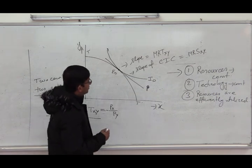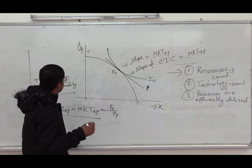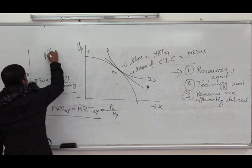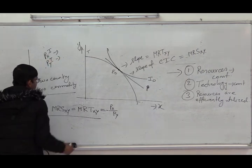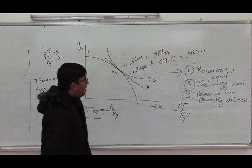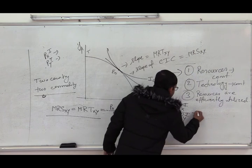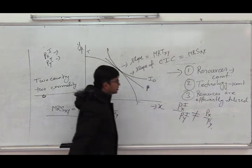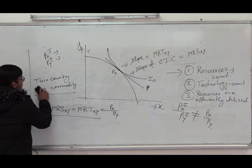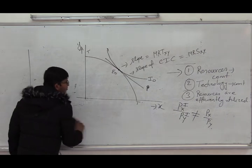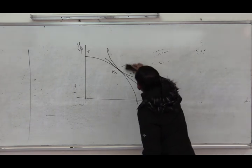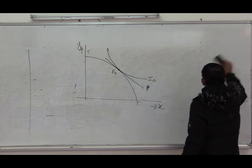Now let us introduce what happens when trade takes place. This country is a small country which cannot influence international prices — it is a price taker in the international market. PX_i is the international price of X and PY_i is the international price of Y. The international terms of trade will be given as PX_i by PY_i. If the international terms of trade differ from the autarky price ratio PX/PY, the country can gain from trade. Once the country enters into trade, the international terms of trade line becomes the consumption possibility locus.